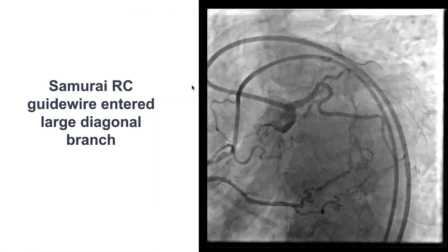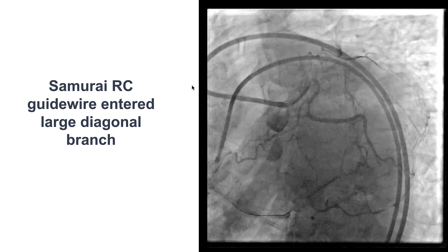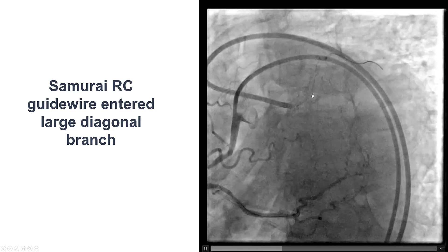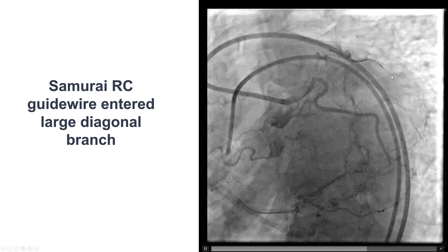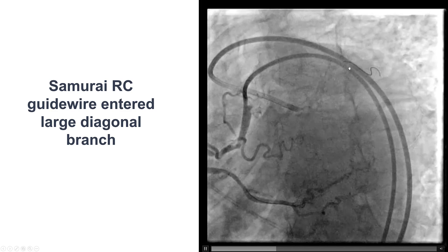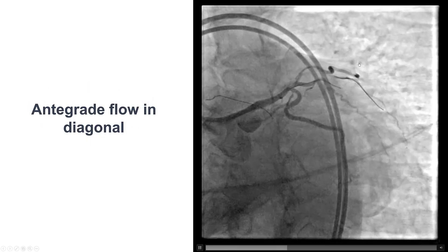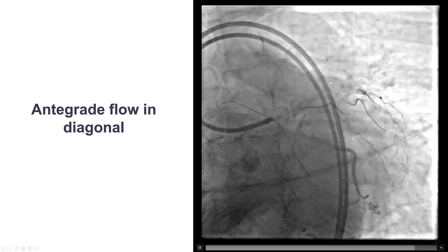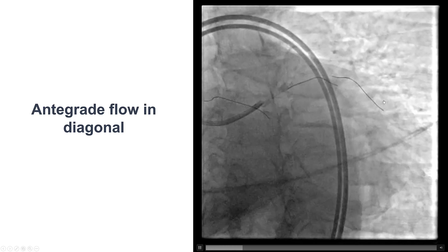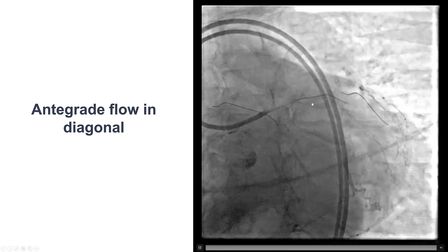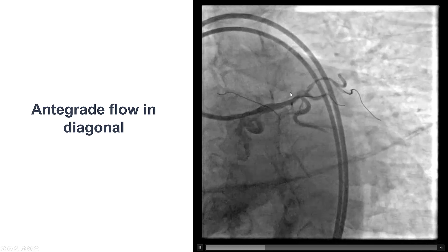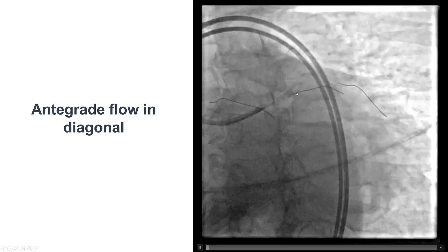To our surprise, when we inserted a Samurai RC guidewire aiming to wire the Ramus branch for protection, the wire actually went into the course of a vessel which turned out to be the large diagonal branch. The wire crossed through the occlusion into this large diagonal branch, and after balloon dilation we have restoration of flow into this very large diagonal branch. We also placed a safety wire into the Ramus branch, but the LAD remains occluded at the takeoff of this diagonal branch.